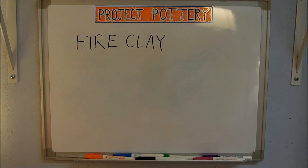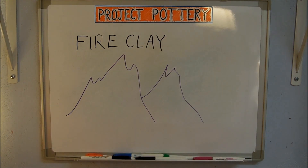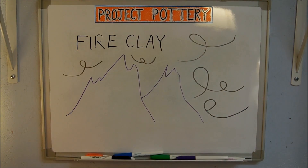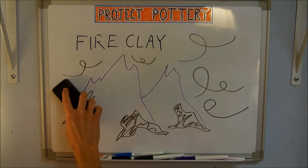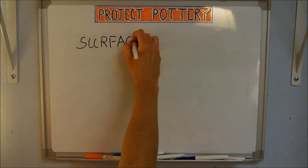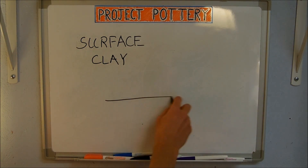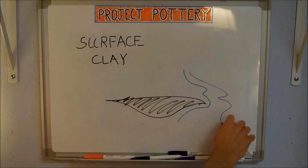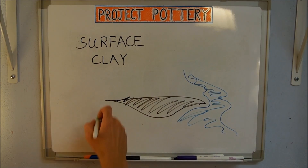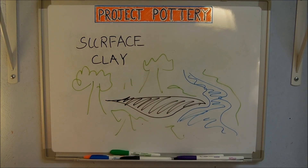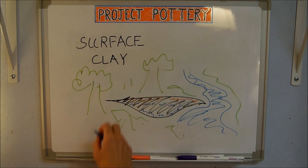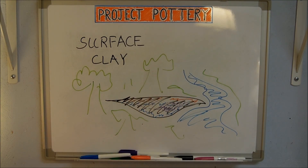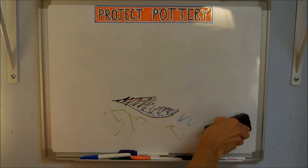Fire clay is clay that forms on dry land in mountainous and desert areas through wind and erosion. It's generally coarse-grained and tough. Surface clay is found all over the earth — it's clay that has formed, moved, and then moved again. As clay moves, it picks up minerals, metals, and other impurities along the way. These impurities change the composition and behavior of the clay. Generally speaking, more impurities result in a lower melting temperature and higher plasticity.